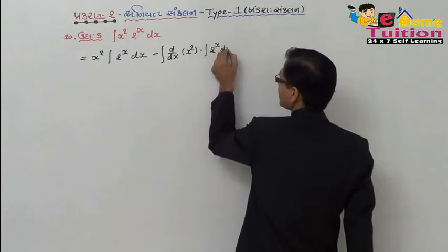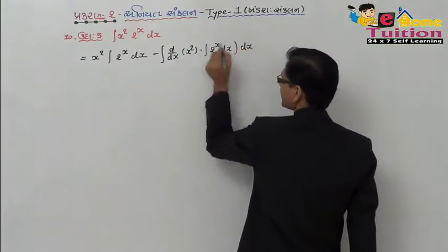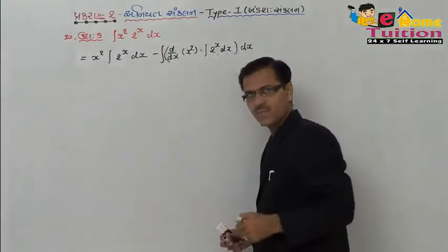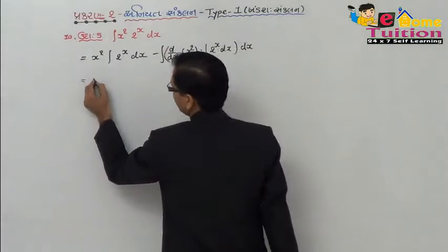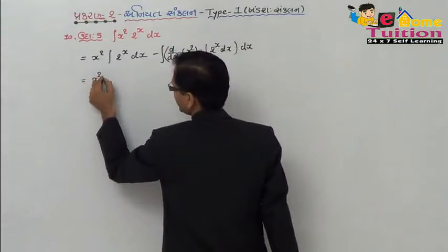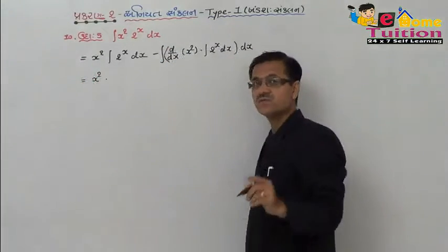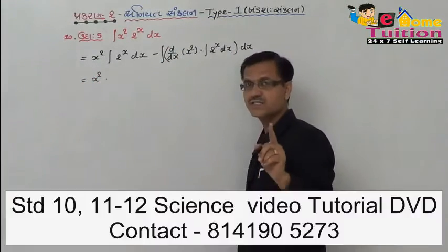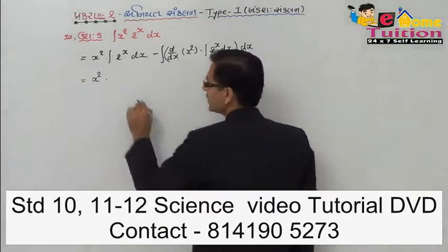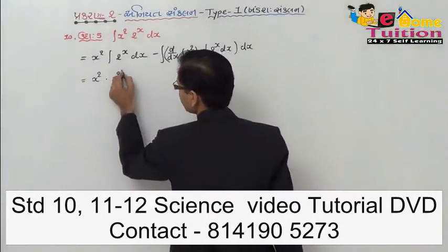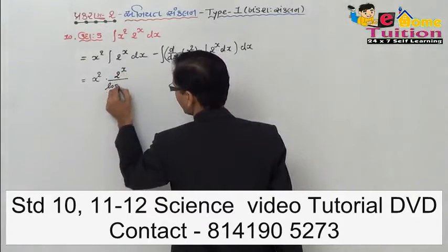x square is 2 raise to x dx and dx. x then 2 raise to x — a raise to x, a raise to x, 2 raise to x upon log 2.